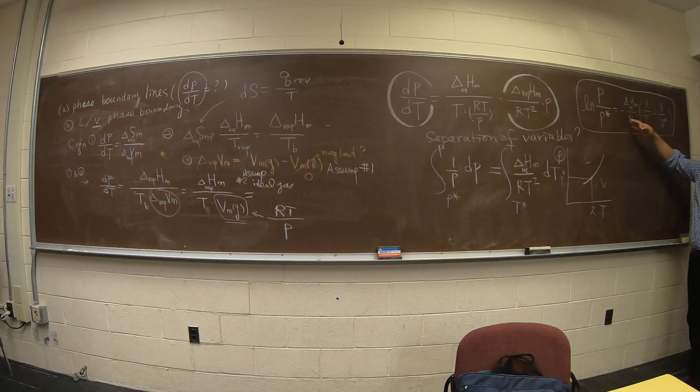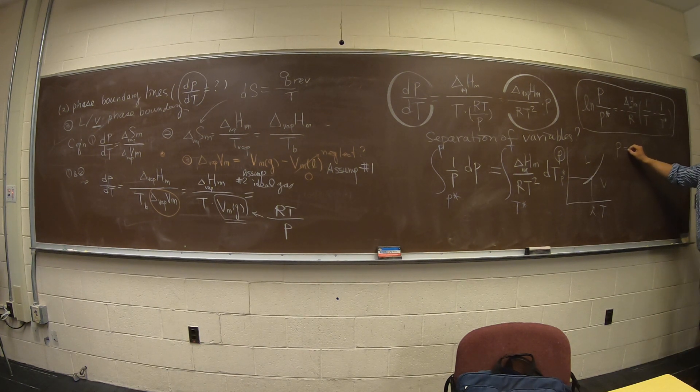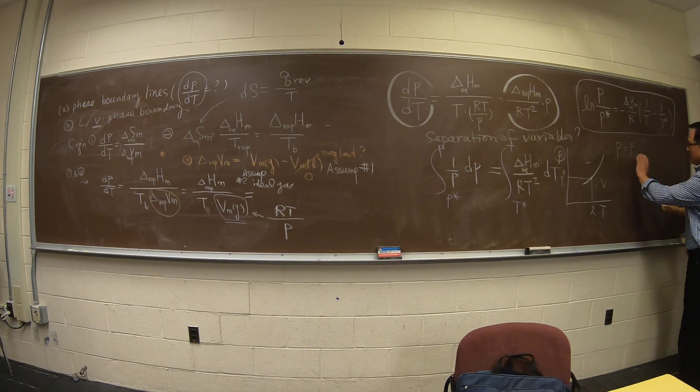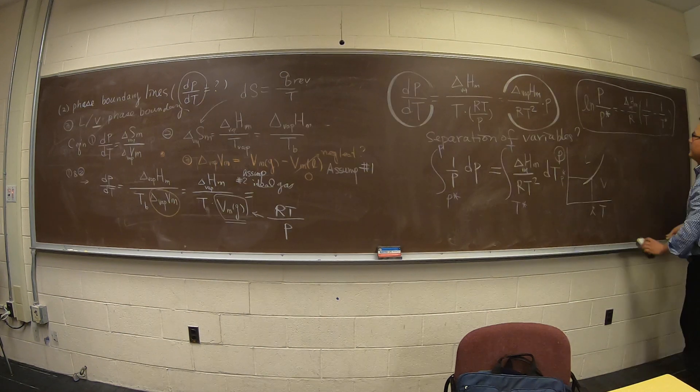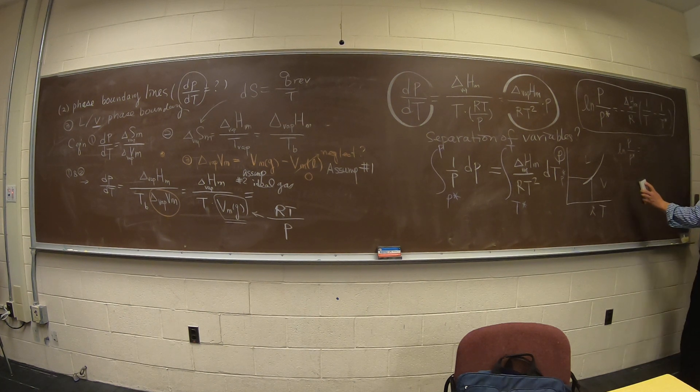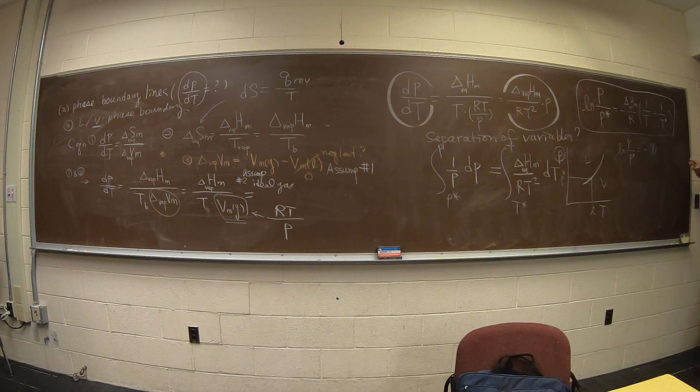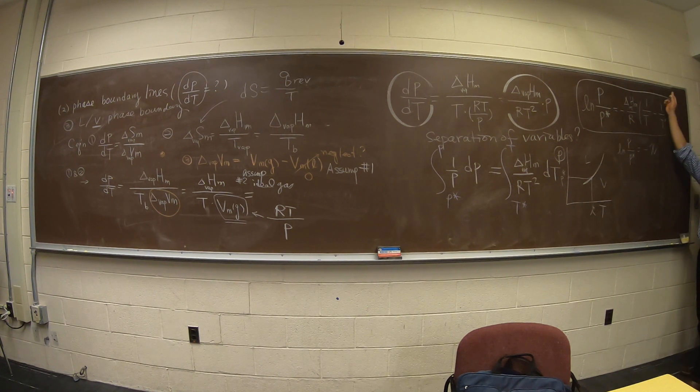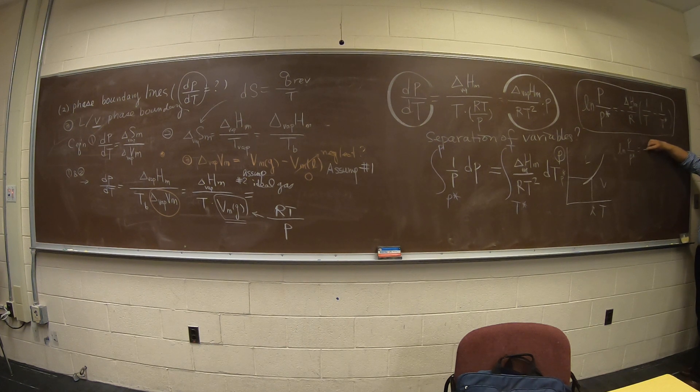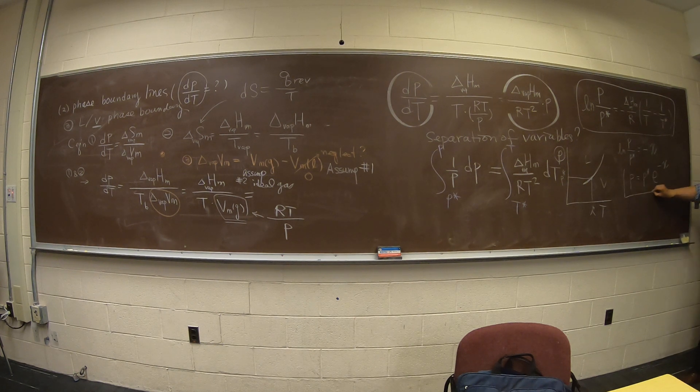People like to make this equation in a different form. Let me write an intermediary: ln P over P* equals minus—I'll put a symbol chi. Chi is nothing but the whole thing. I'll retain my negative sign, so therefore P equals P* exponential minus chi. That's one relationship that people also use.